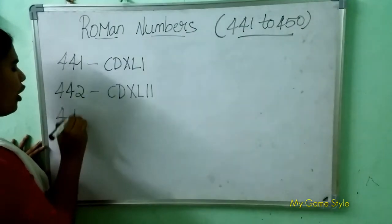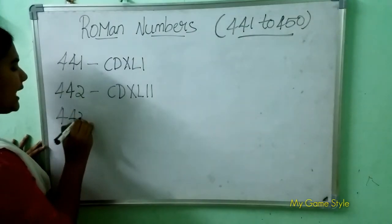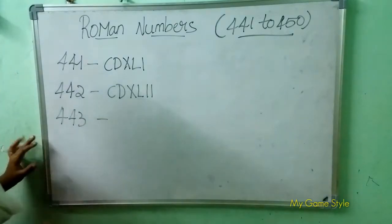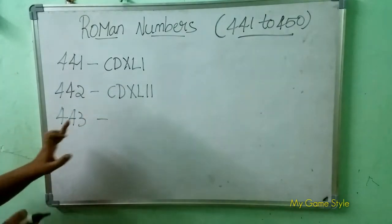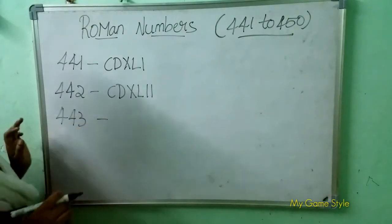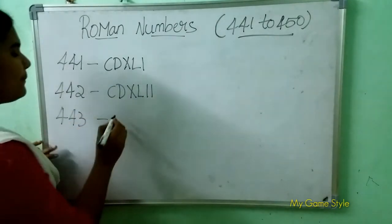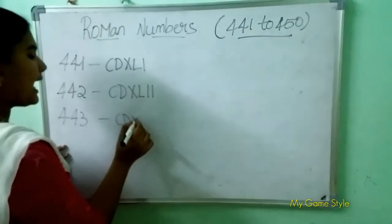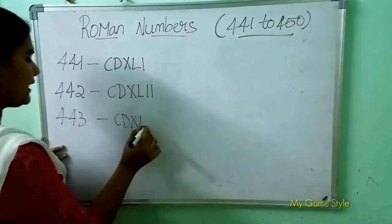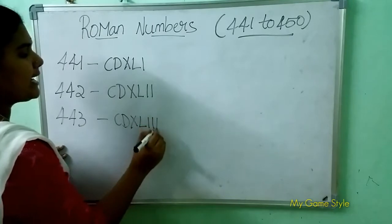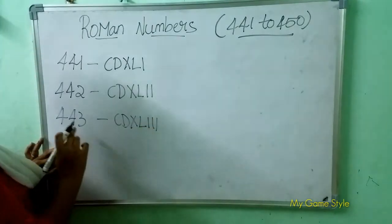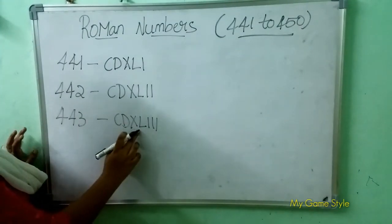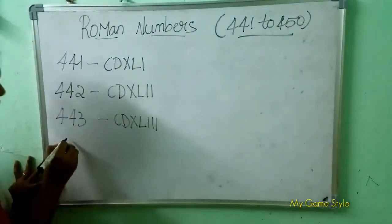Next, 443 — what is this? 443. So how to write the Roman number here? CD is 400, XL is 40, III is 3. So this means 443.